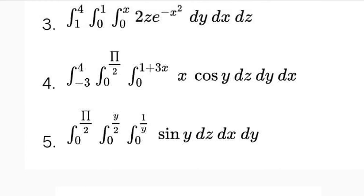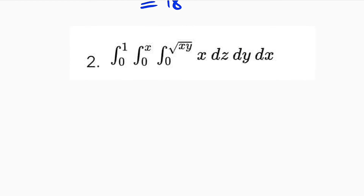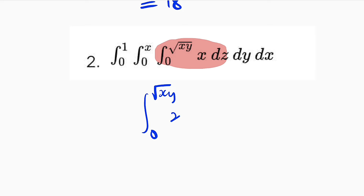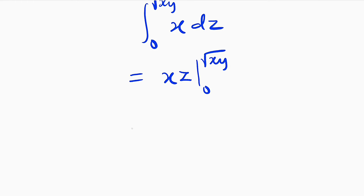Now let us take the second one, which is a definite integral of only the function x with respect to z, y, and x. We start with the integral from 0 to root(xy) of x dz. Our function is x but we want to integrate it with respect to z, so we multiply it by z. This becomes xz evaluated from 0 to root(xy). Wherever we see z we replace it with root(xy). So this equals x multiplied by root(xy). We don't have to substitute the lower bound because it is going to make it 0.